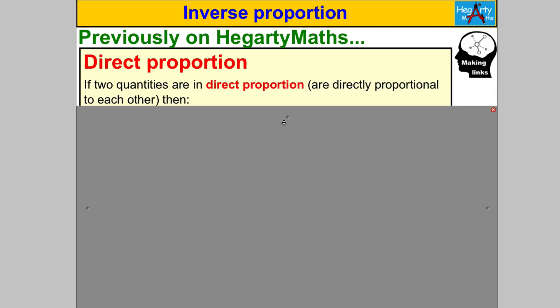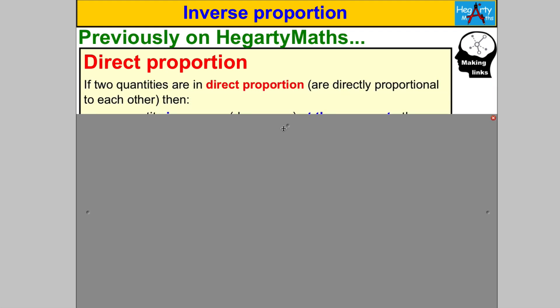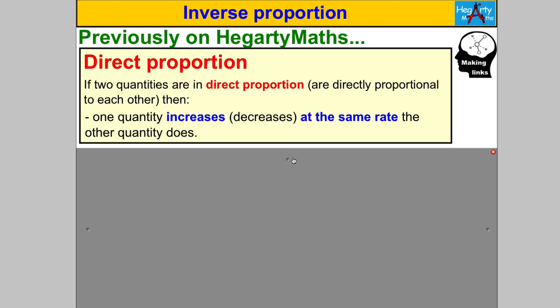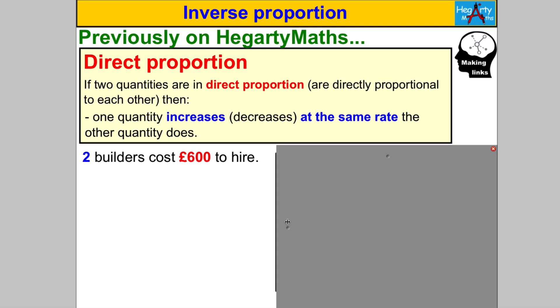I really need you to know this, so double-check you know this. If two quantities are in direct proportion, then we know the following is true: one quantity increases at the same rate the other quantity increases, or one quantity decreases at the same rate the other quantity does. Let me give you a nice easy example.